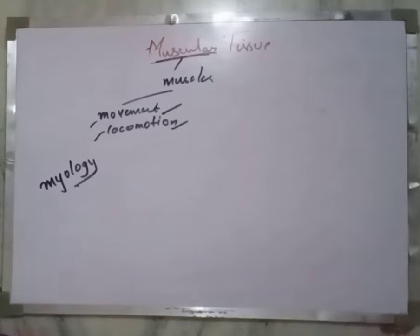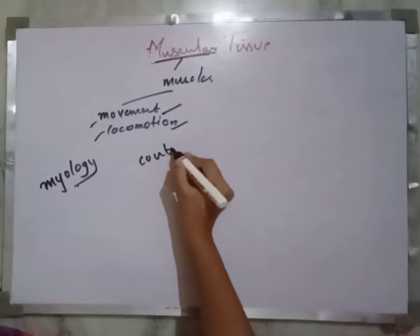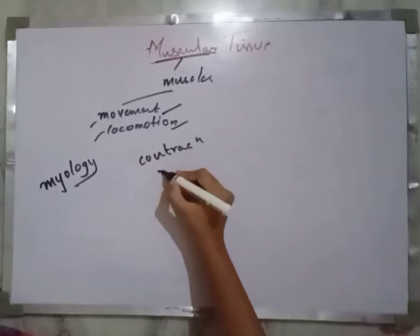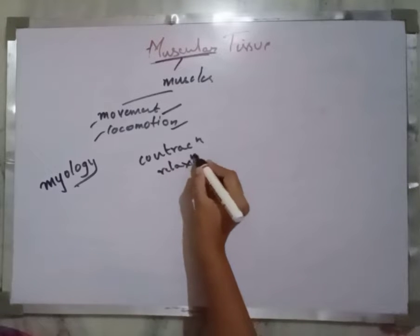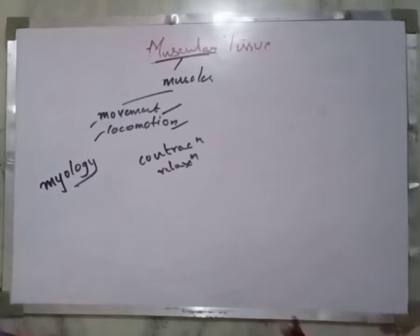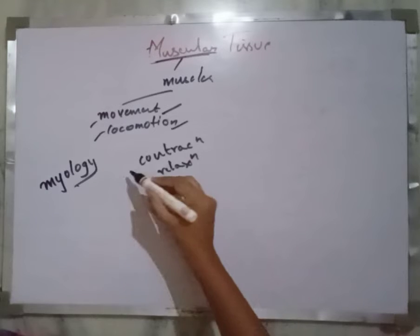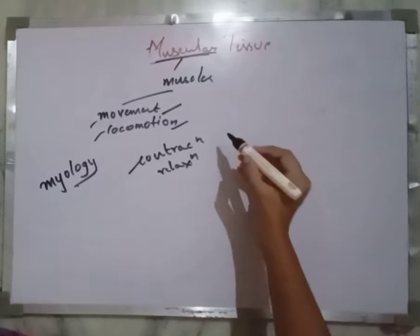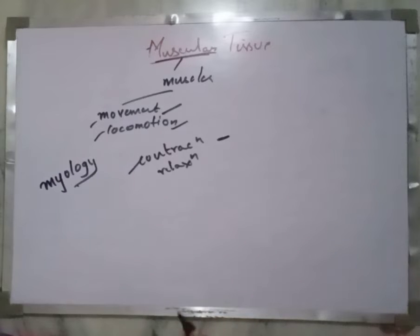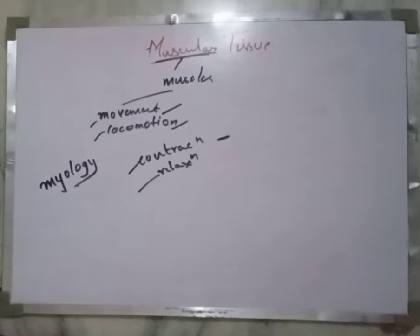Muscular tissue plays an important role in the movement of our organs, body parts, and our locomotion. The study of muscular tissue is called myology — a branch of science which deals with the study of muscular tissues. These muscular tissues have the property of contraction and relaxation. When muscular tissue responds to any stimuli it contracts, meaning it becomes shorter, and after some time it returns to its original state, which is relaxation.